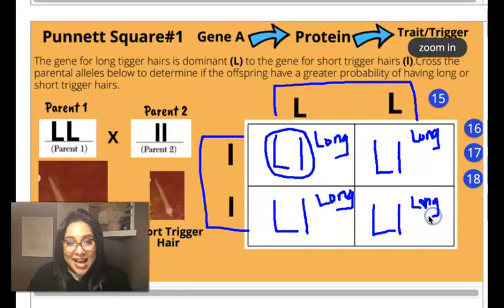So the chances of the offspring inheriting long trigger hairs is a hundred percent. And how do we come to that conclusion? Because the alleles code for a specific trait.